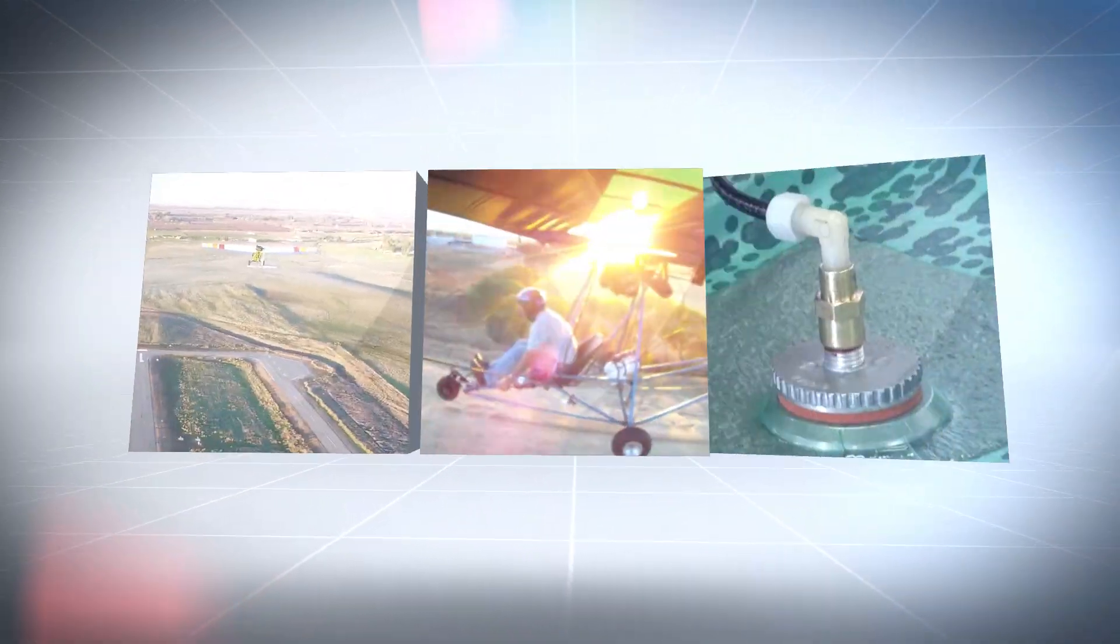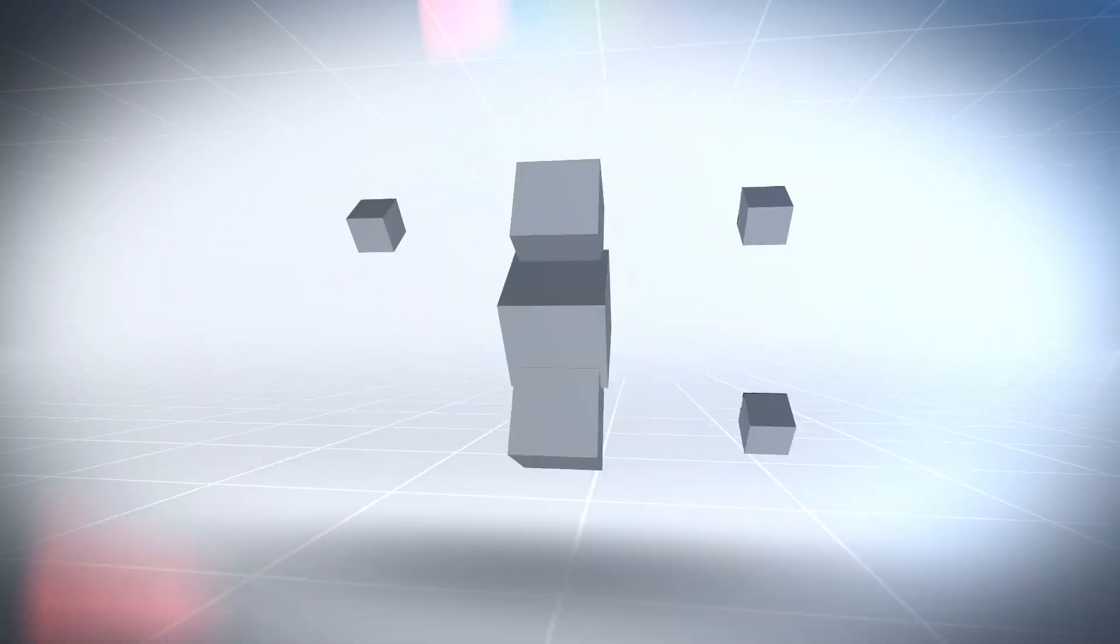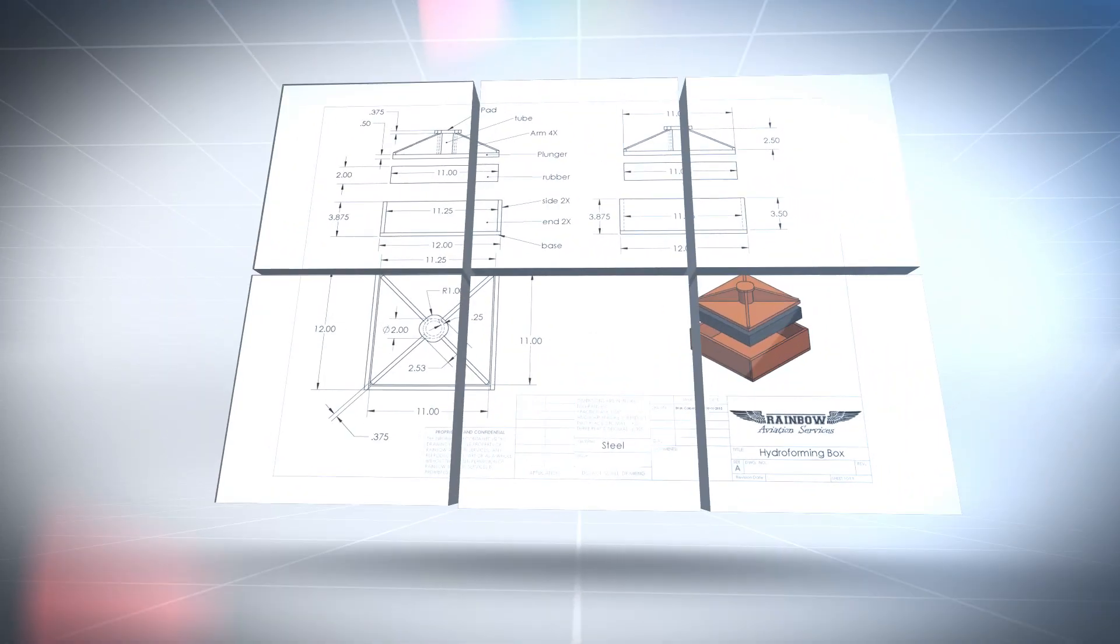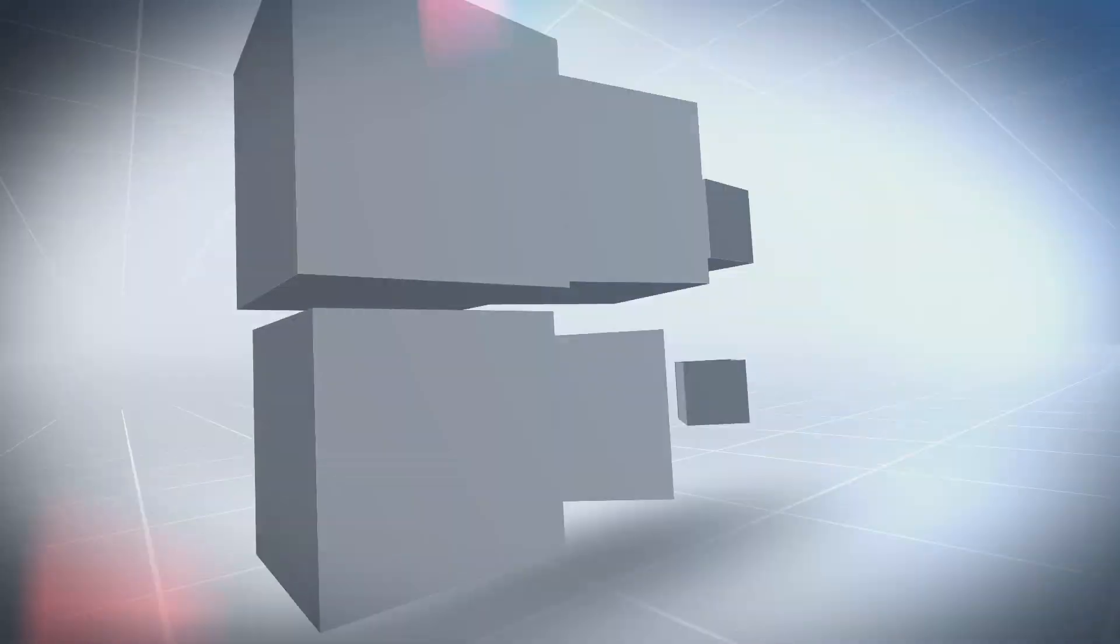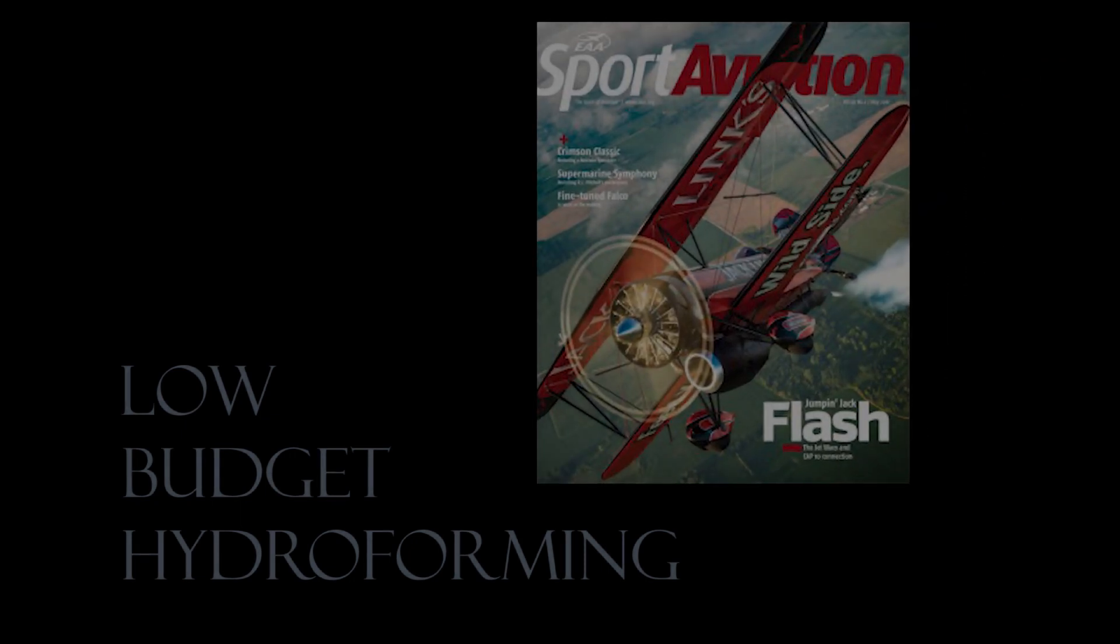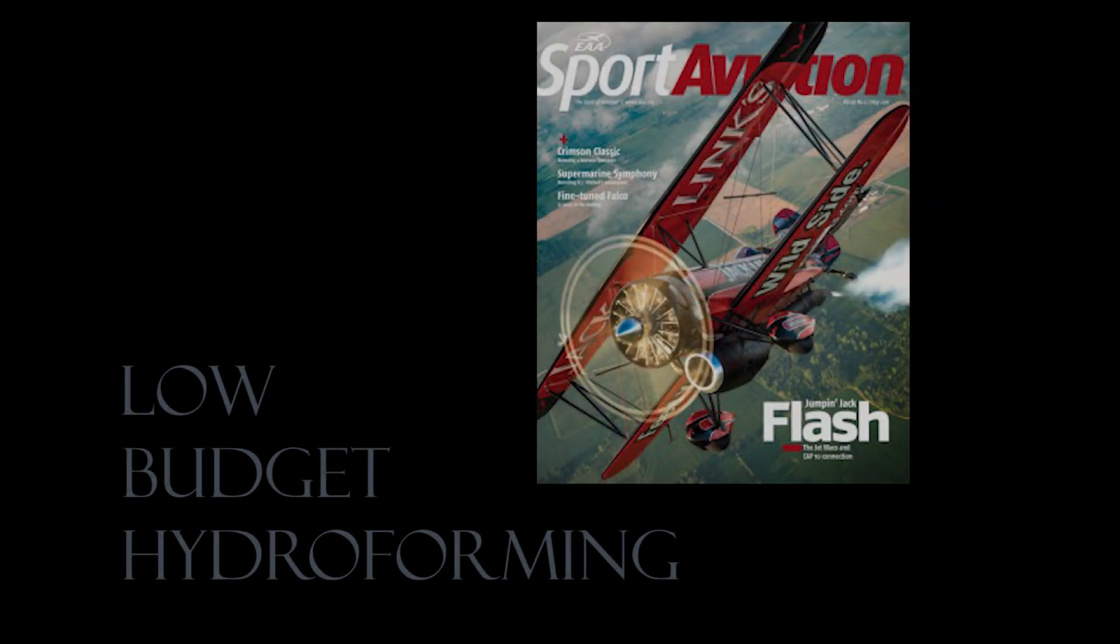This is the Rainbow Aviation video channel, and I'm your host, Brian Carpenter. In today's episode, we're going to be taking a look at a low-cost way for all of you aircraft builders to manufacture your own aluminum hydroformed parts. This is a companion video for the Technically Speaking article published in the May 2016 Sport Aviation magazine.